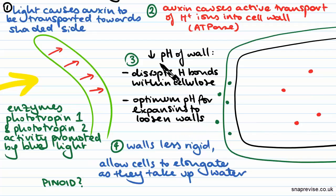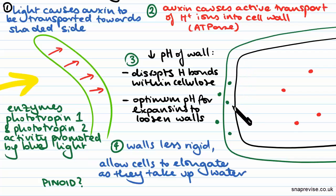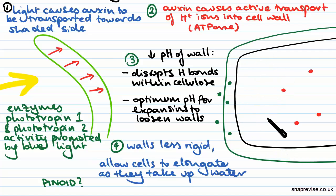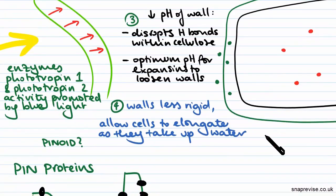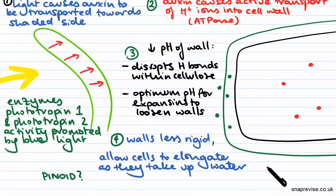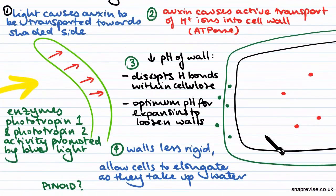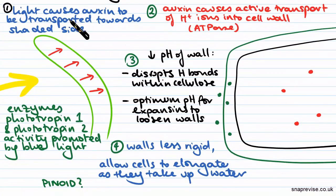but because the cell walls are now being digested slightly by expansin and loosened by the disruption of hydrogen bonding, the cell walls can swell a little bit more and allow the plasma membrane to expand as well.